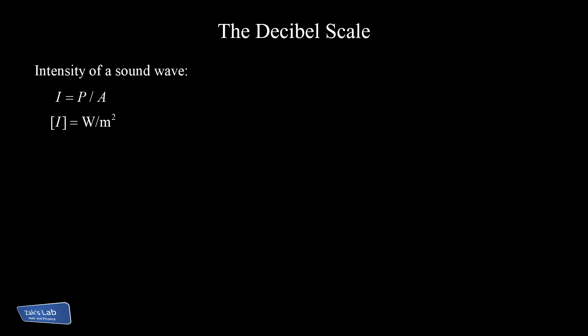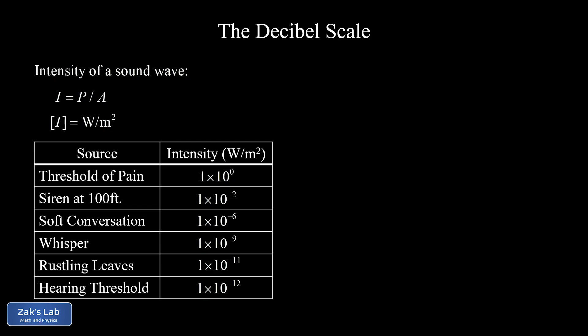Our ears are exquisite instruments for detecting sound because they can detect sound over many orders of magnitude. This chart shows some ballpark estimates of sound intensities that we can all experience qualitatively. The threshold of hearing is about 10 to the negative 12 watts per square meter, a whisper is a thousand times that, an ordinary conversation is a thousand times the whisper, and the threshold of physical pain is 1 watt per square meter — a trillion times more intense than the faintest audible sound.